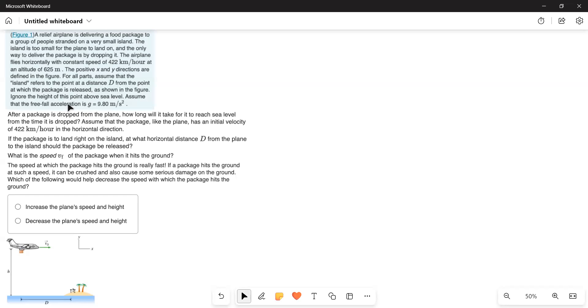assume that the island refers to the point at a distance d from the point at which the package is released as shown in the figure. Ignore the height of this point above sea level. Assume that the free fall acceleration g is equal to 9.8 meters per second squared.